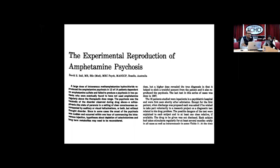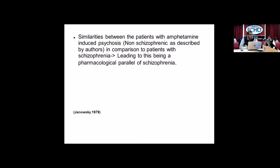To this effect, this is an experimental reproduction of amphetamine psychosis. Dr. Bell, from about 1945 up to 1967, collected a series of cases where he injected patients with amphetamine. These were patients who were actually using it and, with their consent but without being told what drug they were being given, were injected with escalating doses of amphetamine in inpatient care, and observations of psychosis were noted. He clearly states in the article that it was unethical. Subsequently, they noticed similarities between patients with amphetamine-induced psychosis and patients with schizophrenia, leading to this being considered a pharmacological parallel of schizophrenia.